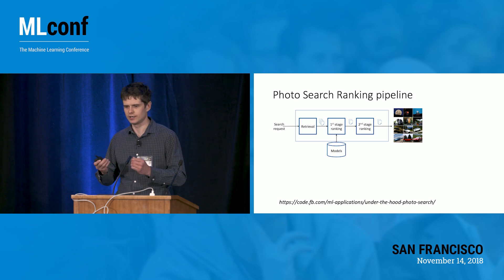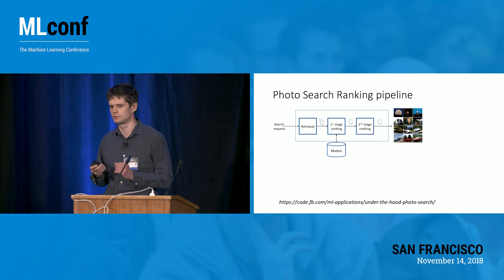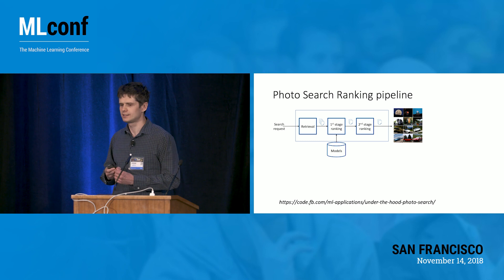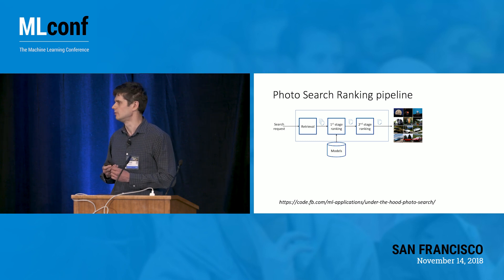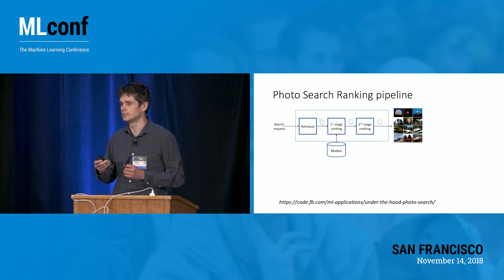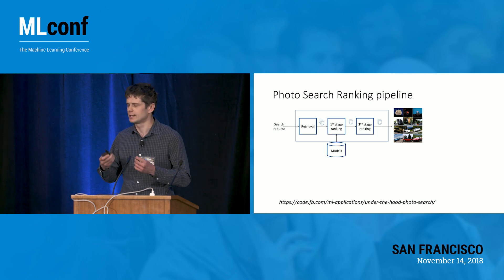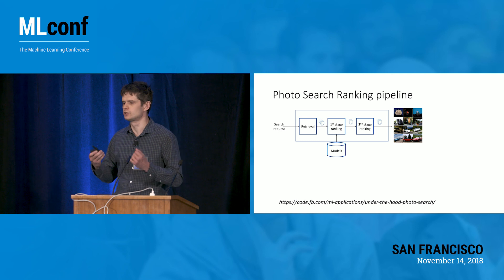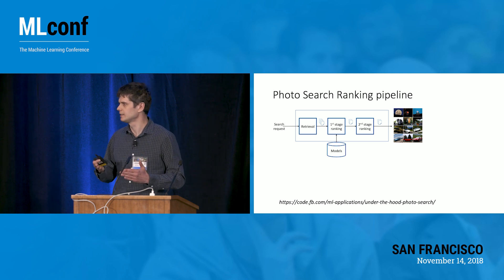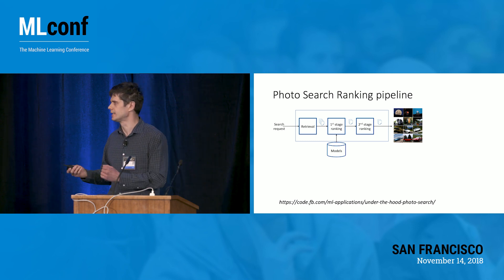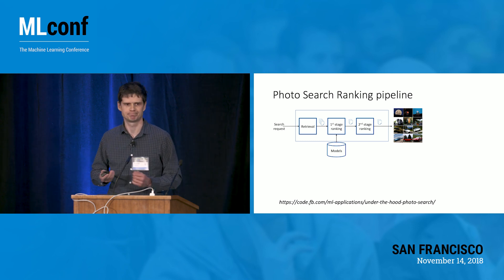To recap the ranking pipeline, we have several steps: retrieval, first-stage ranking that reduces the set to top candidates, and then a second-stage ranker for reranking or resorting the results. Given that, we return the results to the user.